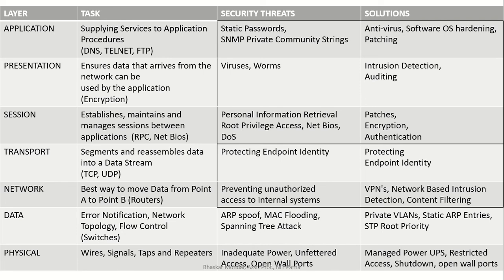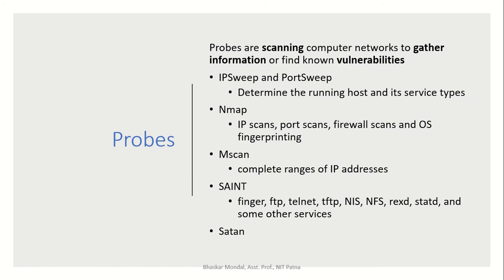In the physical layer, tasks involve signals, taps, and repeaters. Security threats are inadequate power supply, unfettered access, and open wall ports. Solutions include using UPS to manage power, restricting access, and shutting down open wall ports.